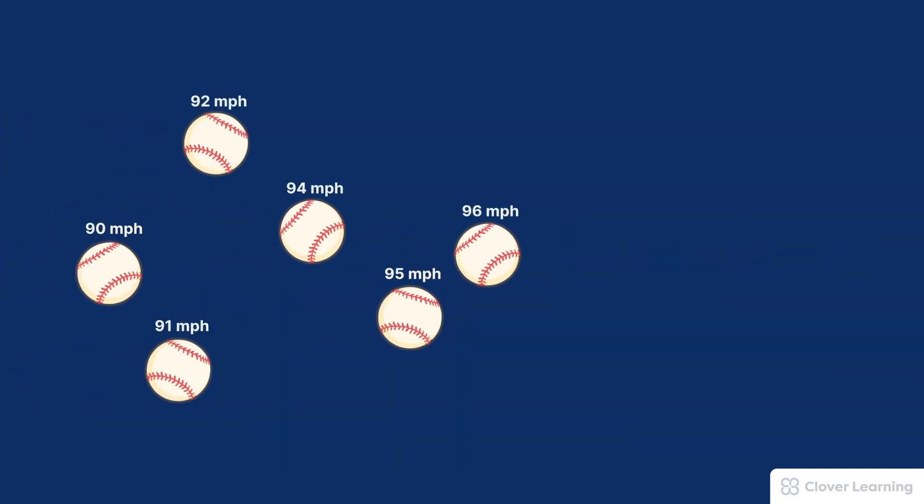A different pitcher might come into the game and pitch a different inning and we'd get different numbers. In this example there's only six total pitches, so the quantity has decreased to six balls, but the average velocity is much higher at 93 miles per hour. So the quality has increased.